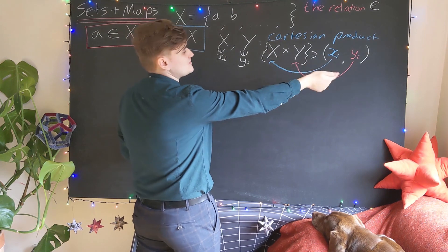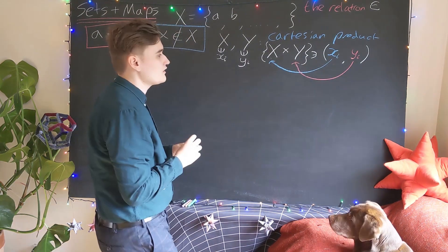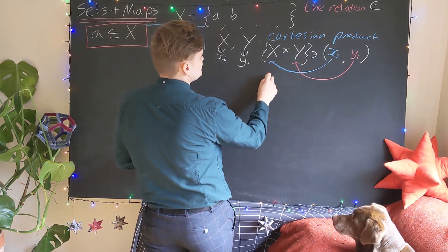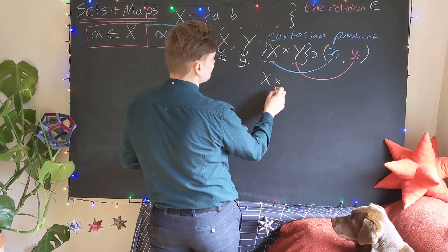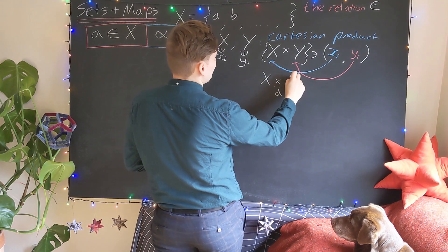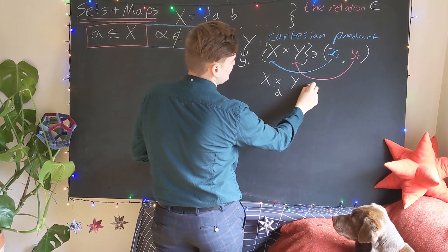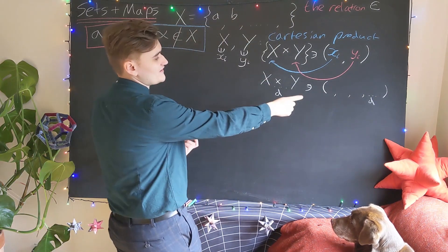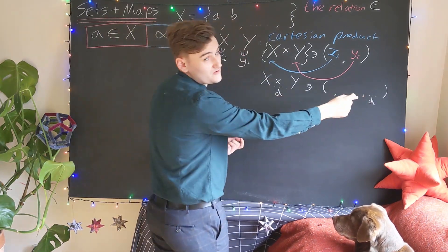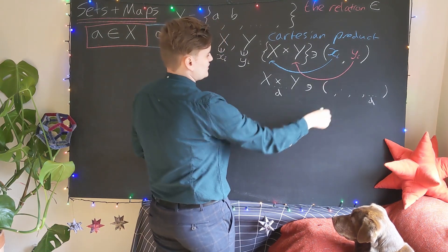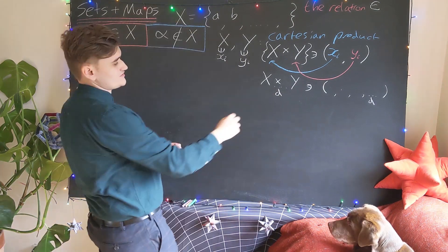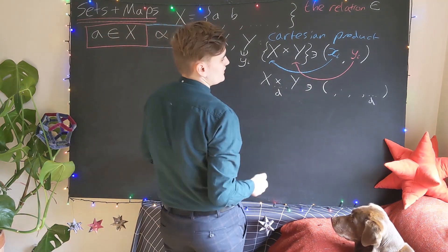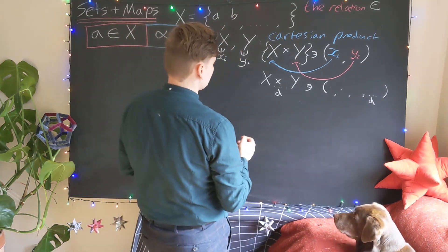We could potentially have more than two sets — we can consider the Cartesian product of any number of sets. So if we take d lots of a set and Cartesian product them, then the elements of this set are what we call a d-tuple, which is effectively just a list of d entries. Each entry comes from the corresponding set. A two-tuple is commonly called a double, a three-tuple a triple, and then as we go on we just refer to them as d-tuples.